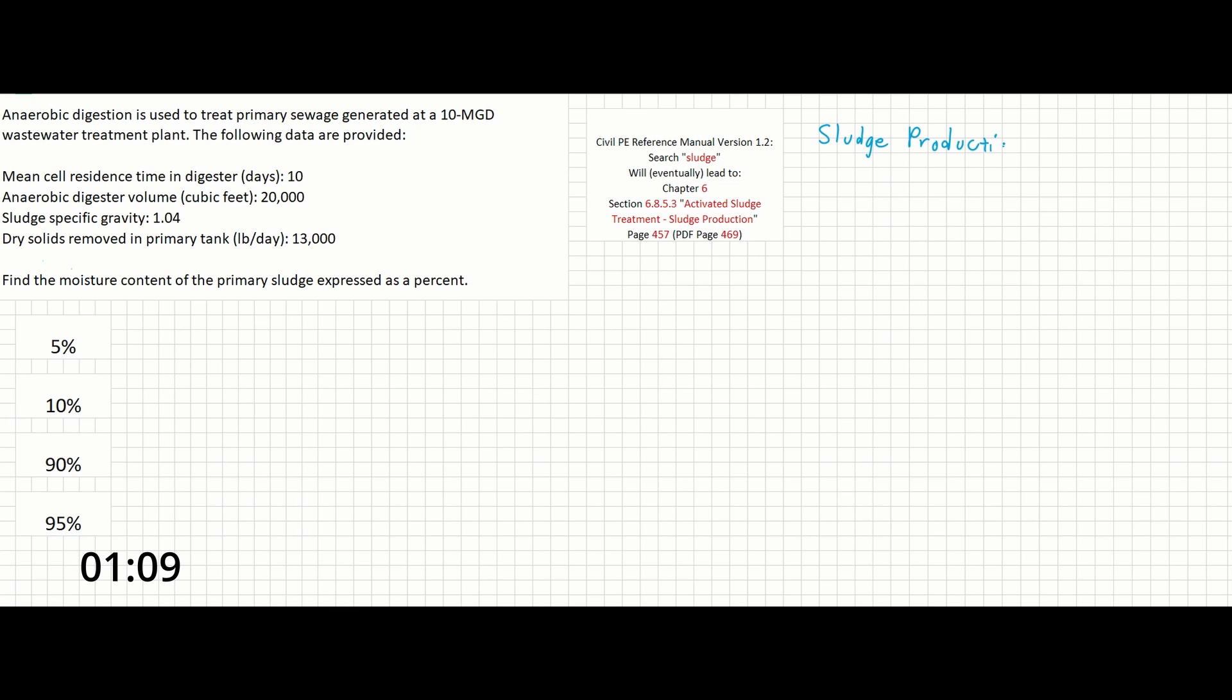The sludge production equation is given as follows: V_S equals M over P_S, S_S, GW.